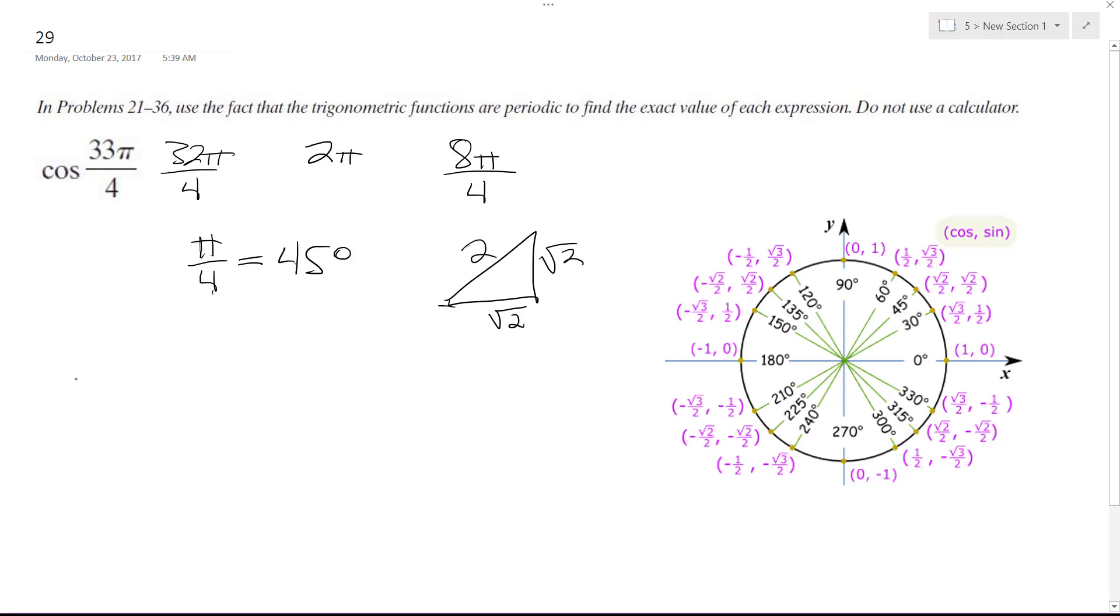And we want the cosine, cosine of 33π over 4, which is the same thing, coterminal to 45 degrees, is going to be equal to root 2 over 2.